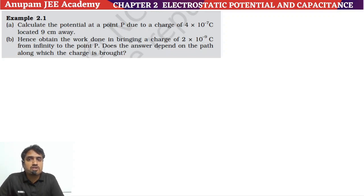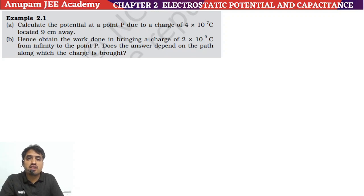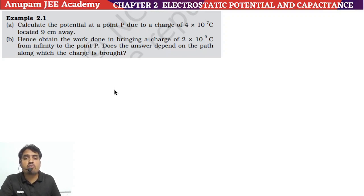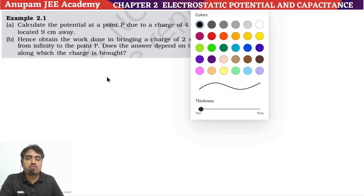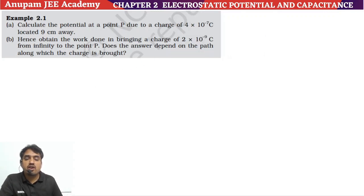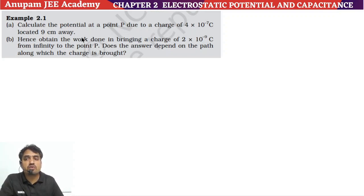The first question we are looking at is Example 2.1, and example questions are also very important. Here we have to find the basic electric potential. The question is: calculate the potential at point P due to a charge of 4×10⁻⁷ coulomb located 9 centimeters away.